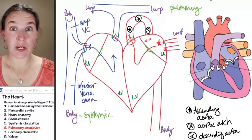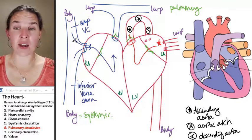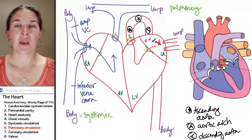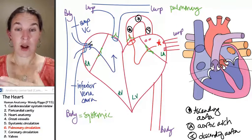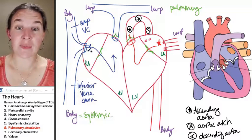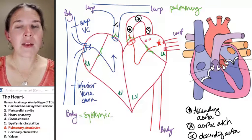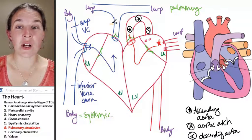Okay, pulmonary circulation, easy peasy. We've already gone crazy places. We brought dirty blood back through some flavor of vena cava into the right atrium, into the right ventricle, up the pulmonary trunk.